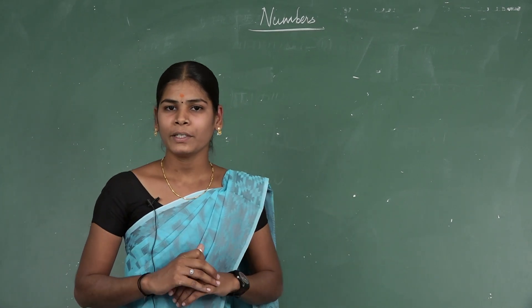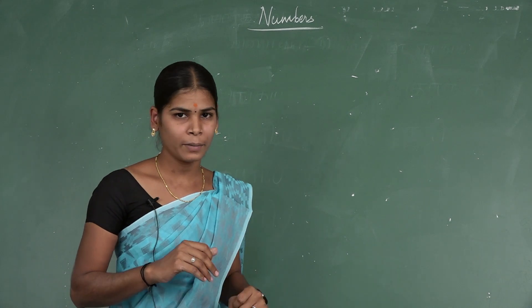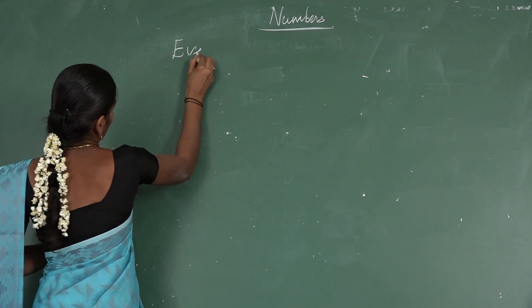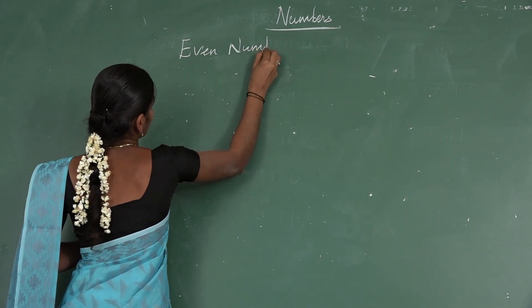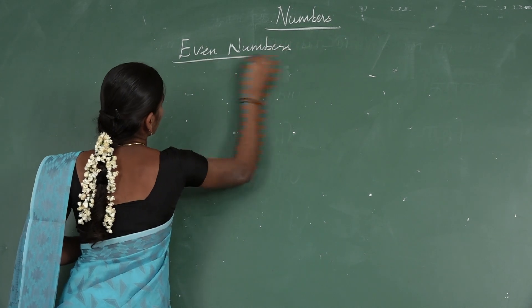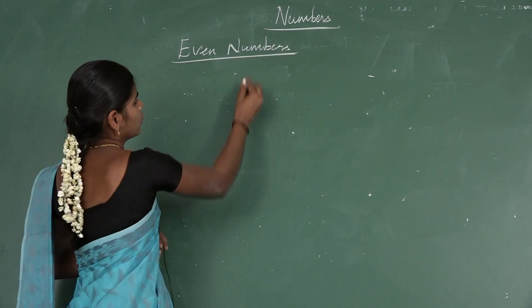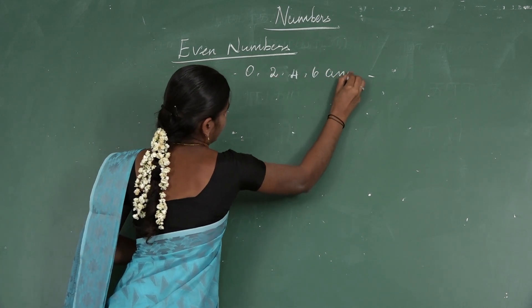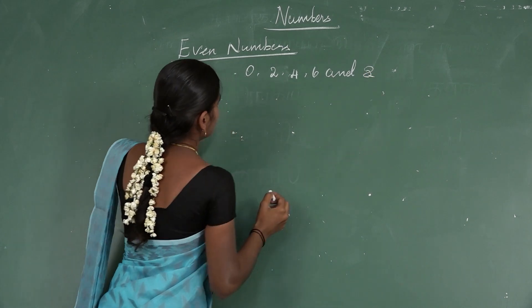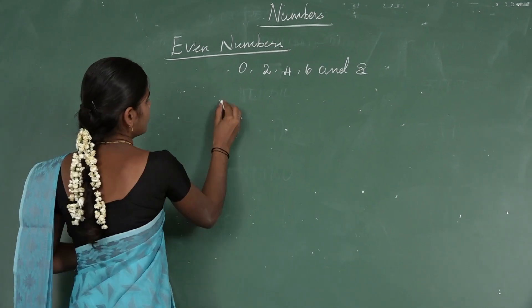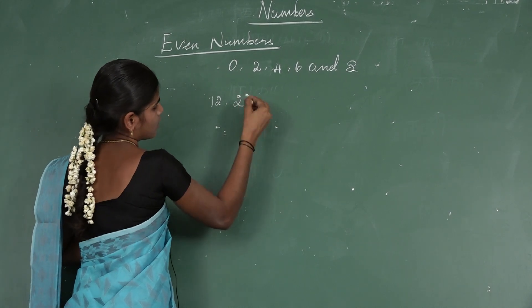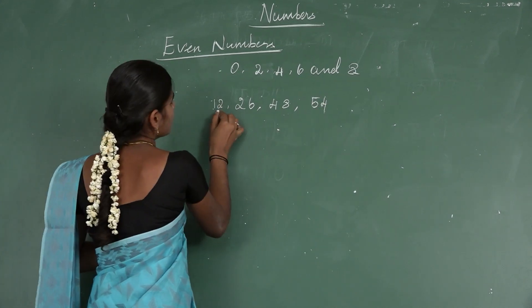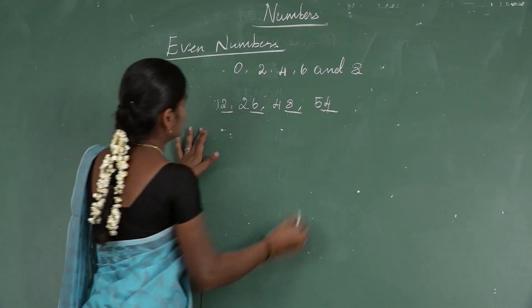Generally, numbers are divided into two types. The first one is even numbers and the other one is odd numbers. Even numbers are numbers ending with 0, 2, 4, 6, and 8. These numbers are called even numbers. For example, 12, 26, 48, 54 — these numbers end with 2, 6, 8, and 4, so they are even numbers.